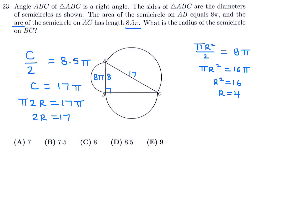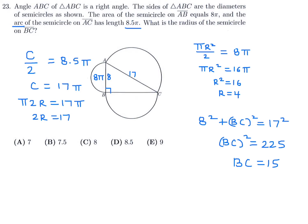Now we turn to BC. We can find it using the Pythagorean theorem since it's a right triangle: 8² + BC² = 17². So BC² = 17² − 8² = 289 − 64 = 225, and therefore BC = 15. The diameter of the semicircle on BC is 15, so the radius is 15 divided by 2, which is 7.5. Number 23, the answer is B.